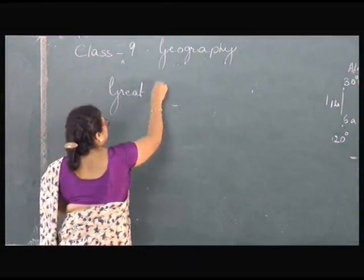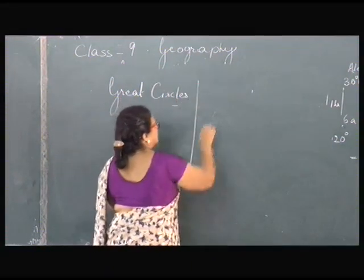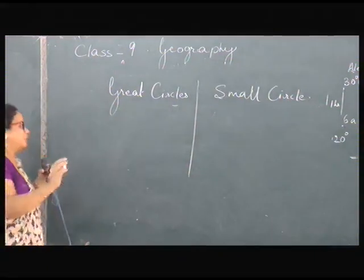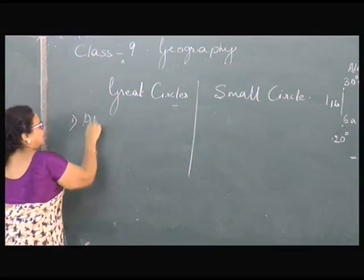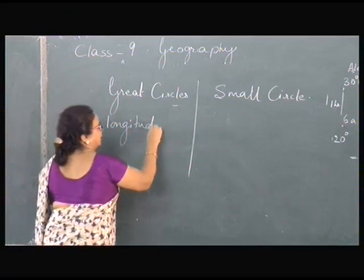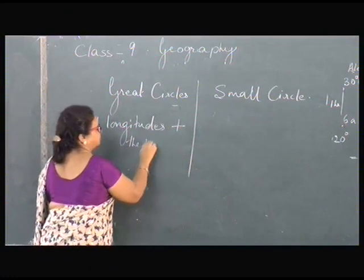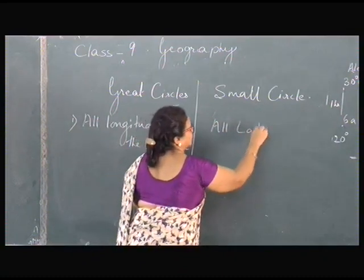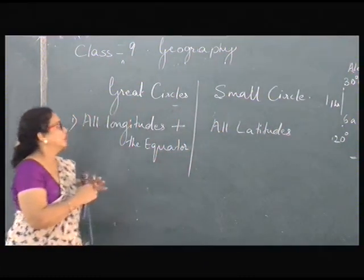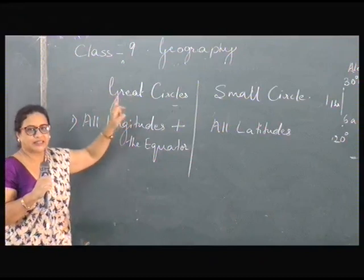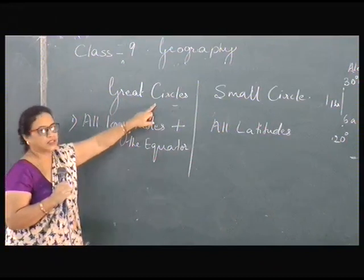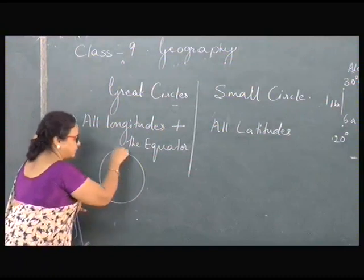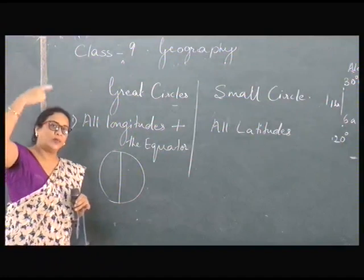We come to the two types of circles: great circles and small circles. Most important thing to be remembered: all the longitudes are great circles plus the equator. In case of small circles, all the latitudes are small circles. A great circle divides the earth into two equal halves. The center of the circle coincides with the center of the earth.